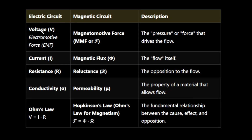To summarize the analogies: voltage is analogous to MMF, current is analogous to flux, resistance is analogous to reluctance, conductivity is analogous to permeability, and Ohm's law is analogous to Hopkinson's law, or Ohm's law for magnetism.